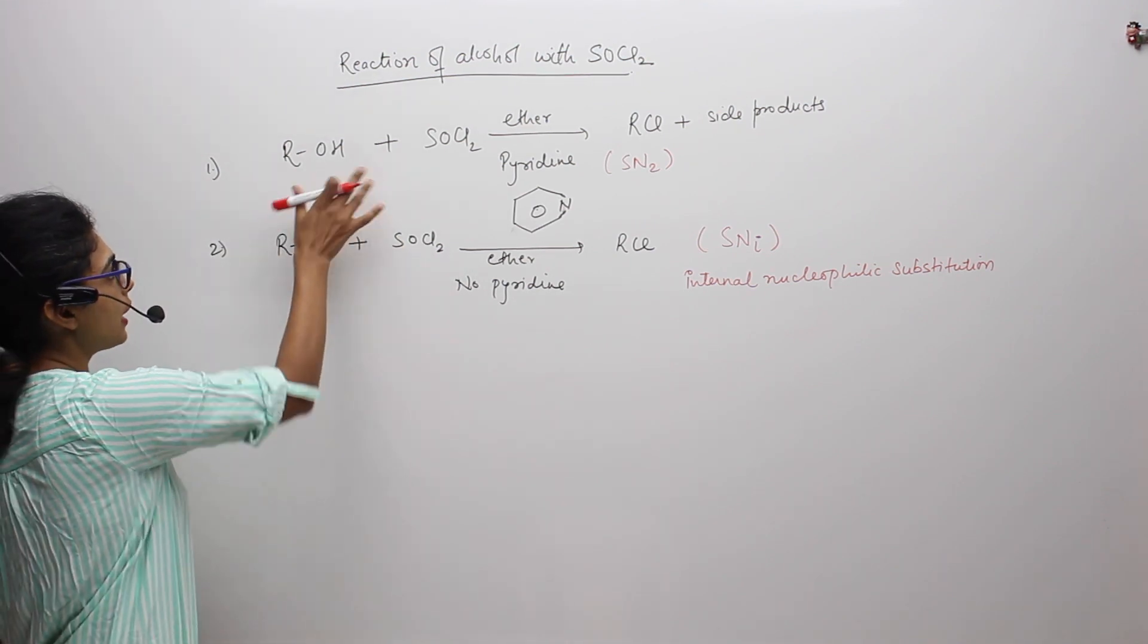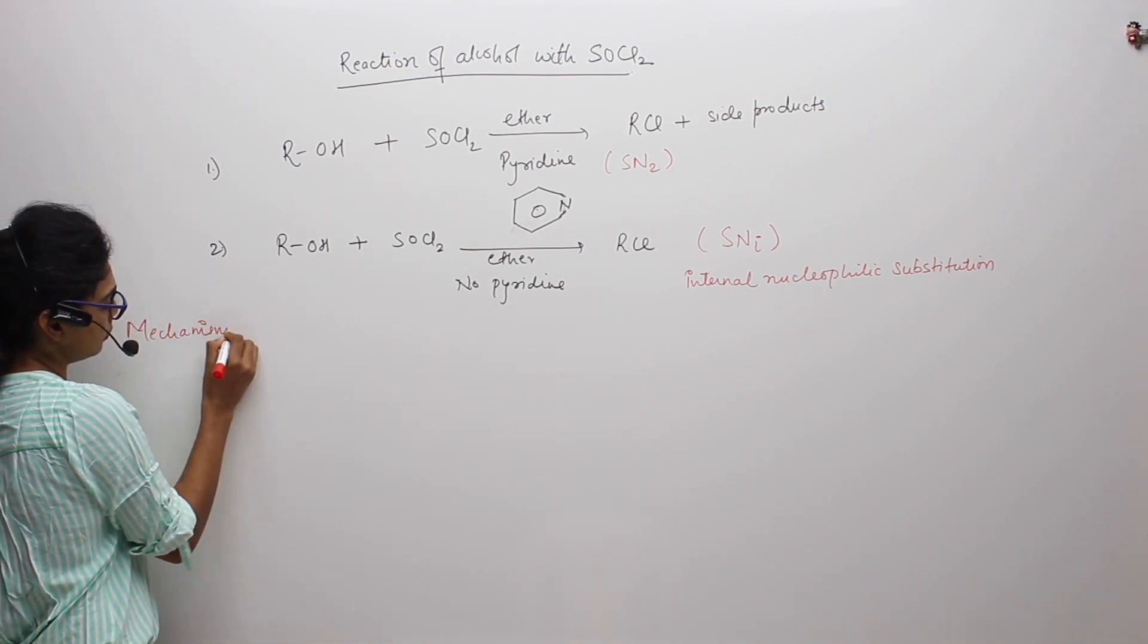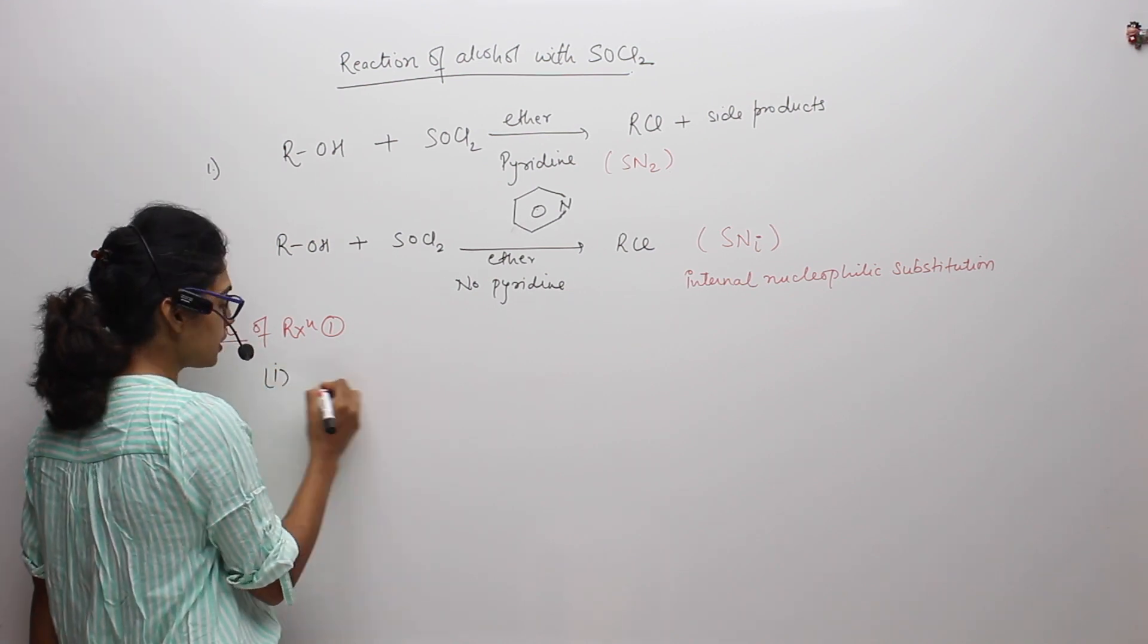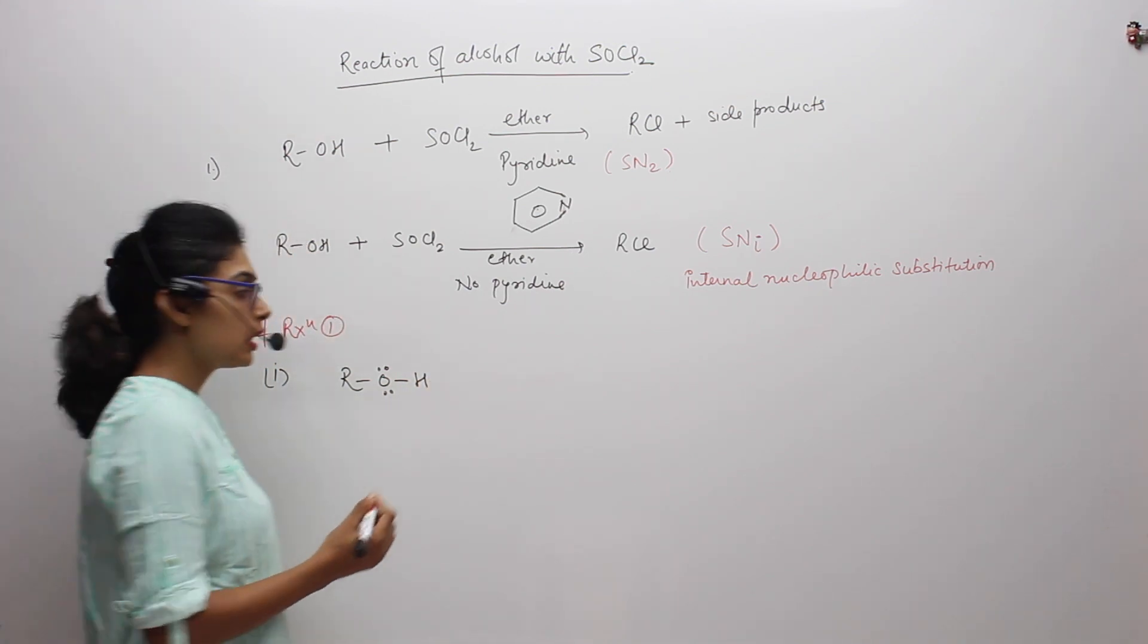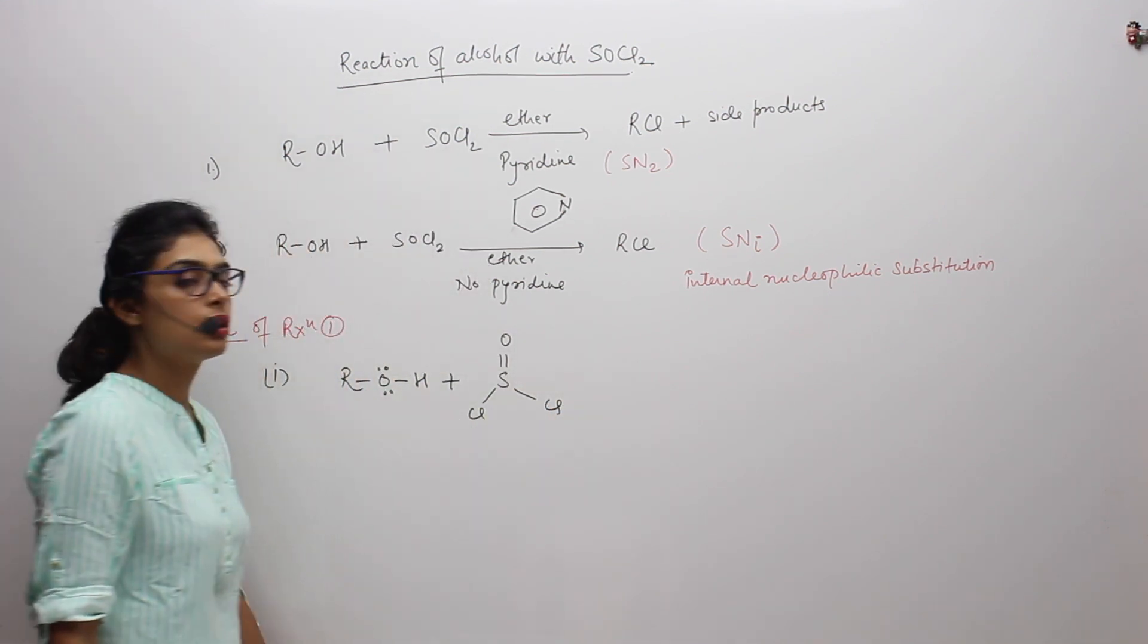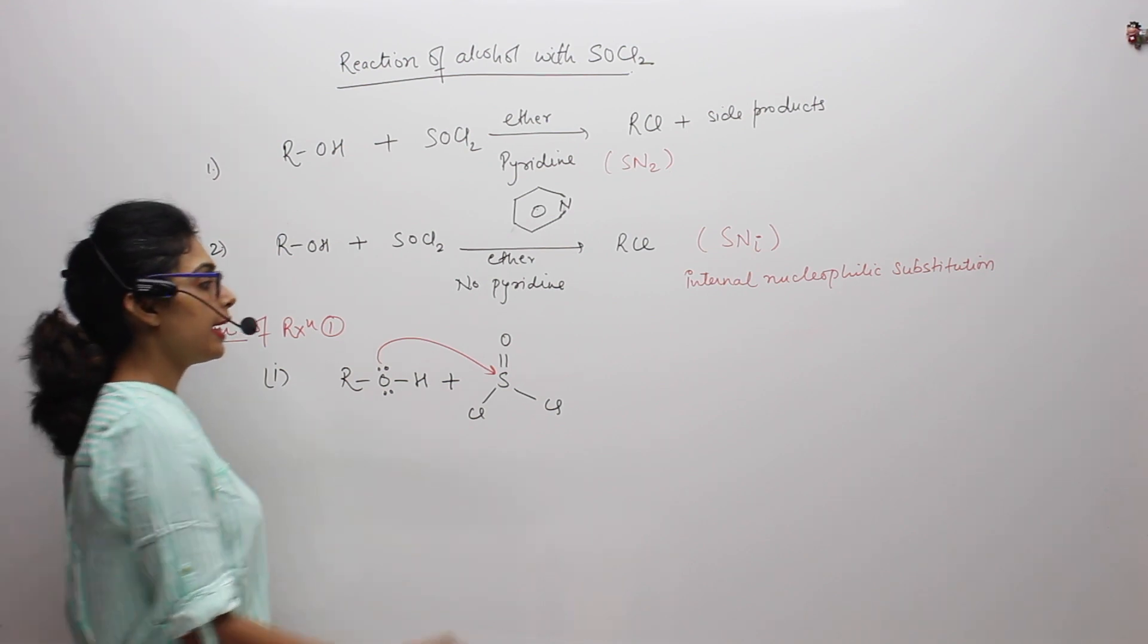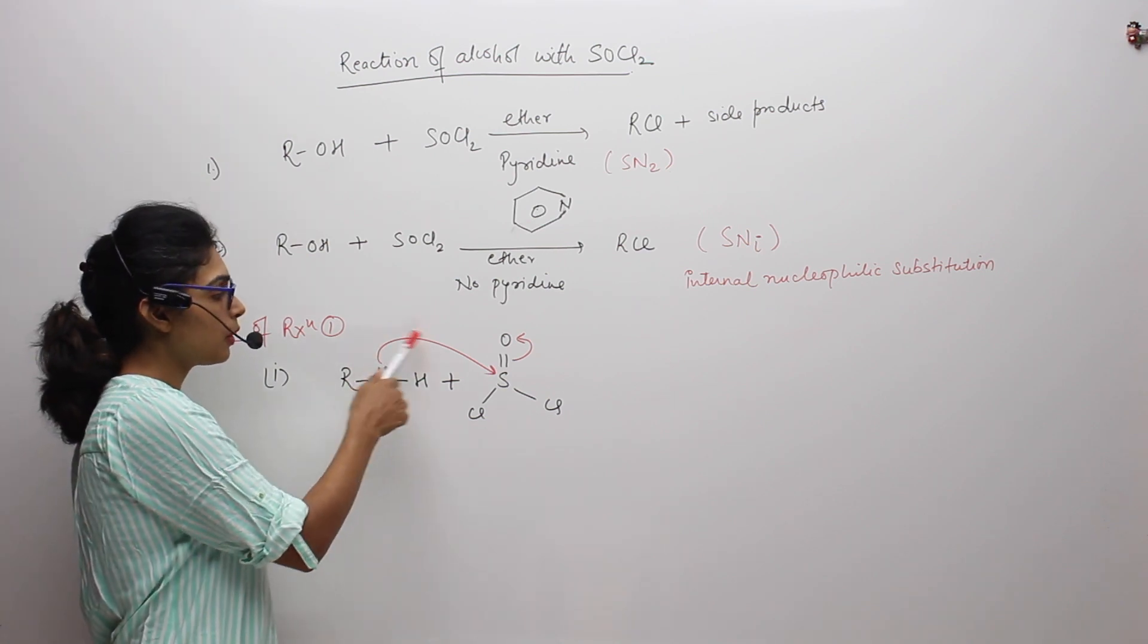So right now we will try to understand the mechanism of the first reaction. In reaction 1, first step, we have alcohol. Alcohol will come in contact with SOCl2. O of oxygen would try to form a bond with S. And S will break its existing bond with O so that it can accommodate that pair of electrons and make a bond.